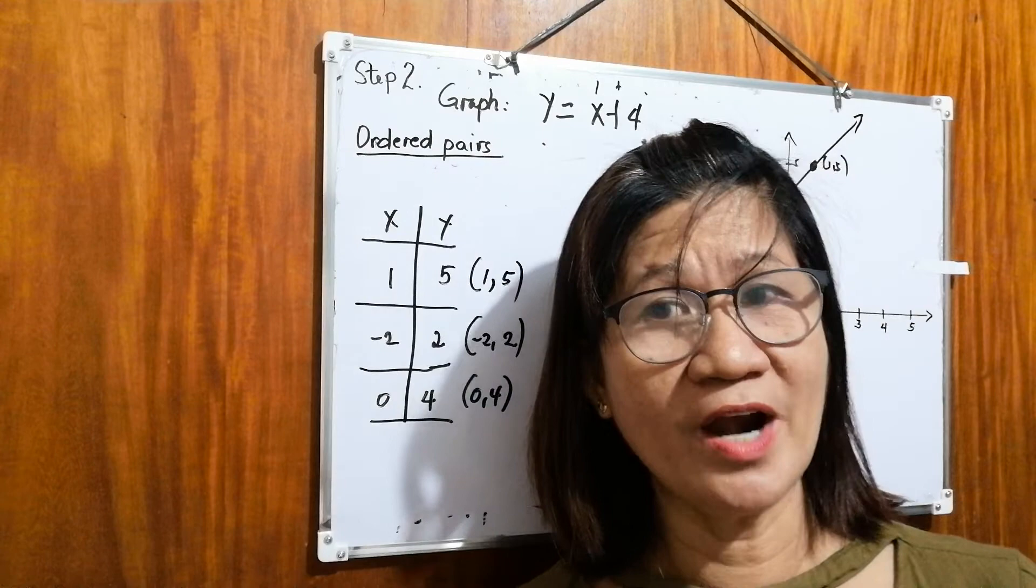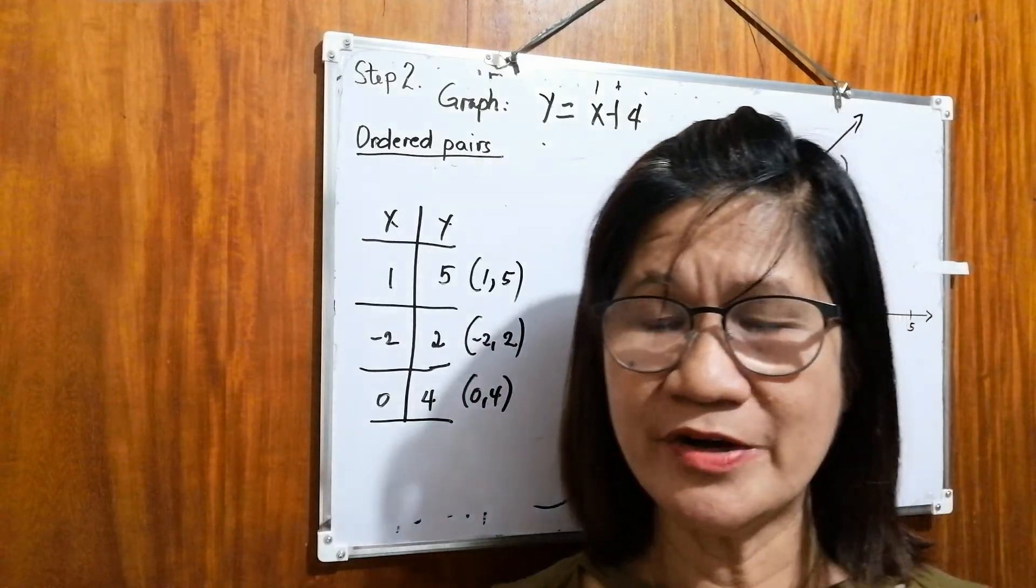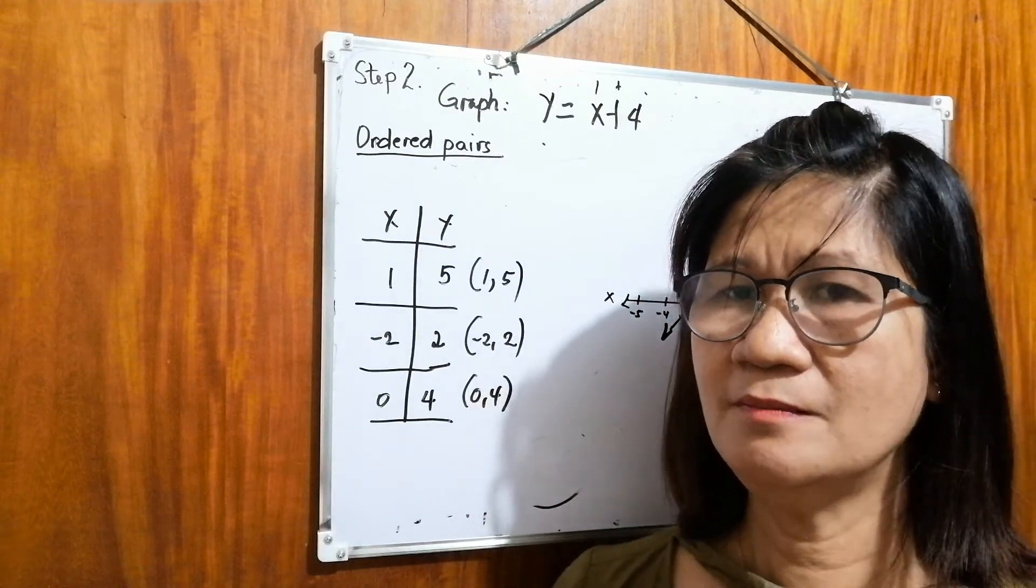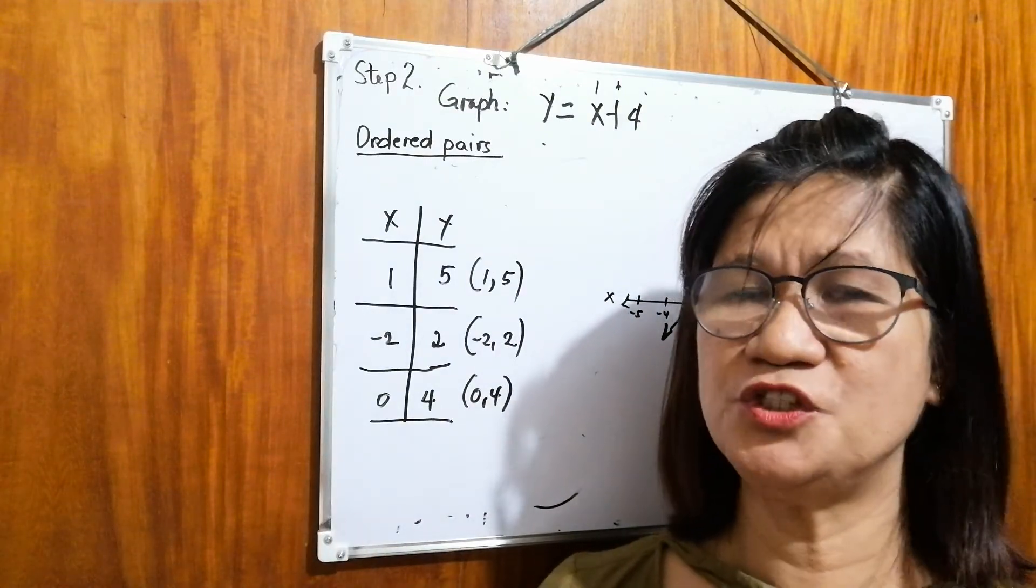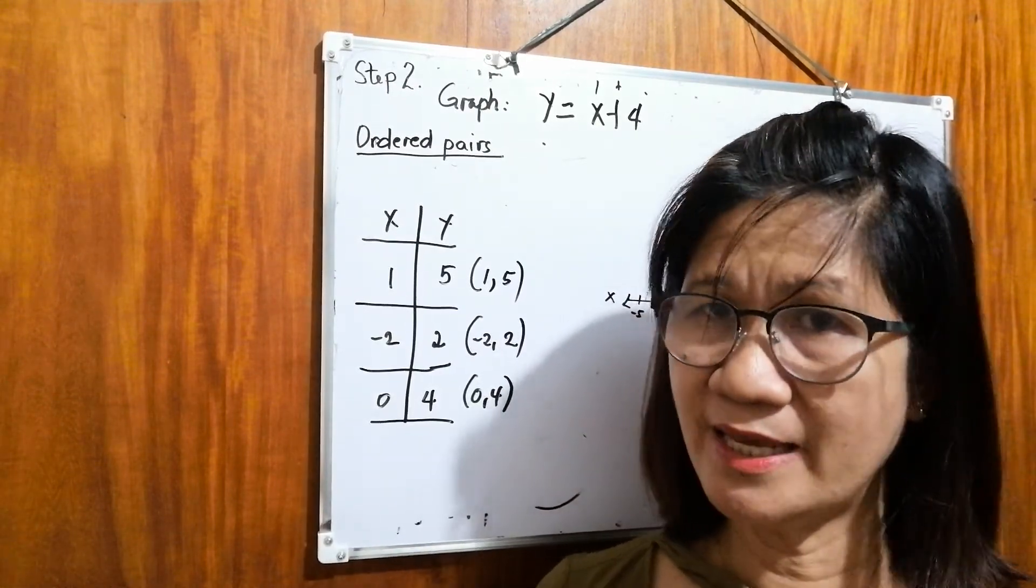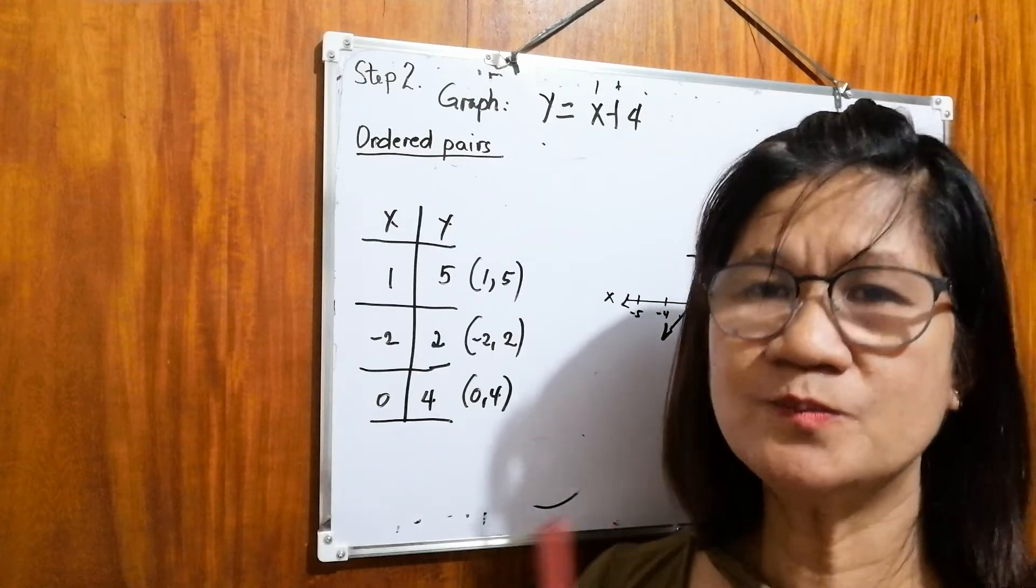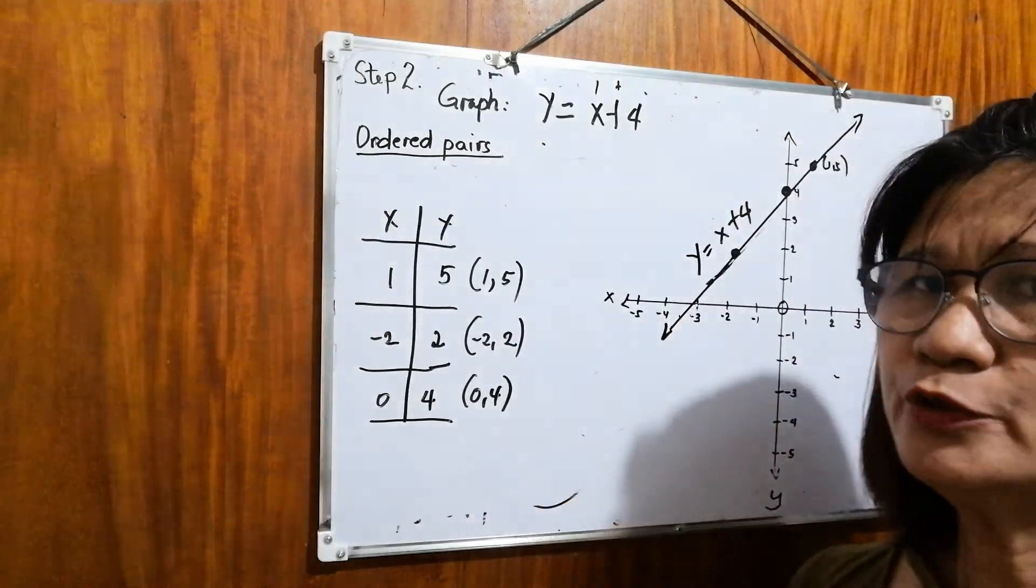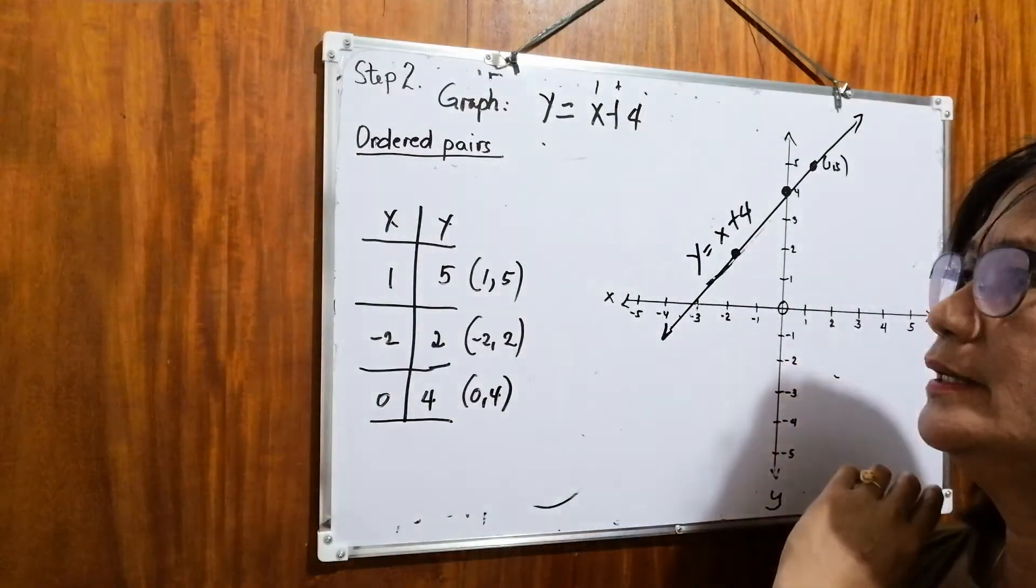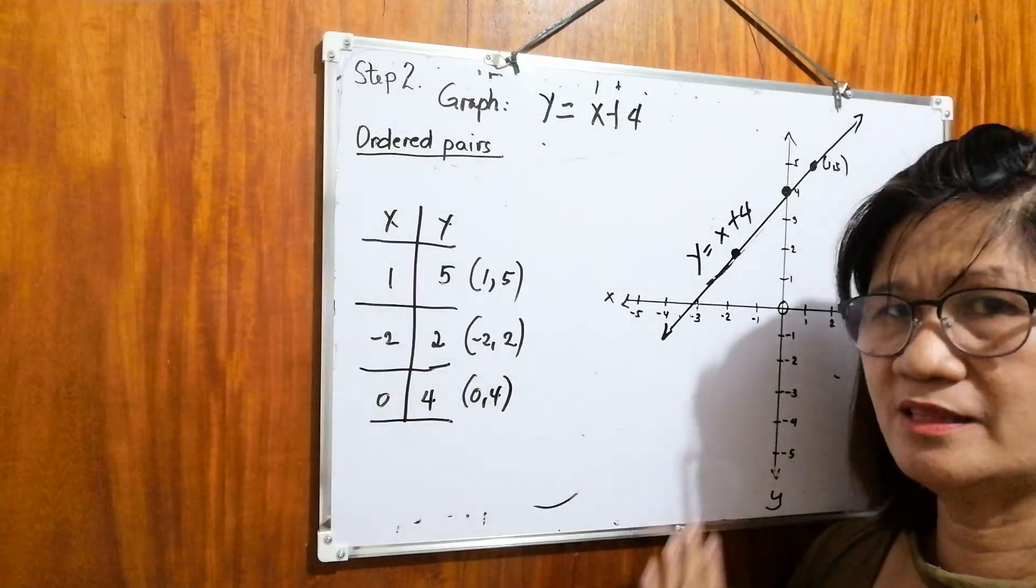So again, review. How to graph linear equations in two variables. First, you need materials. You have the graphing paper, you have your straight edge or ruler. Then in graphing it, first you need to determine at least 3 ordered pairs by assigning using a table. After that, after obtaining 3 ordered pairs, you draw Cartesian plane using your graphing paper. After that, you plot the points. After plotting the points, you connect them.